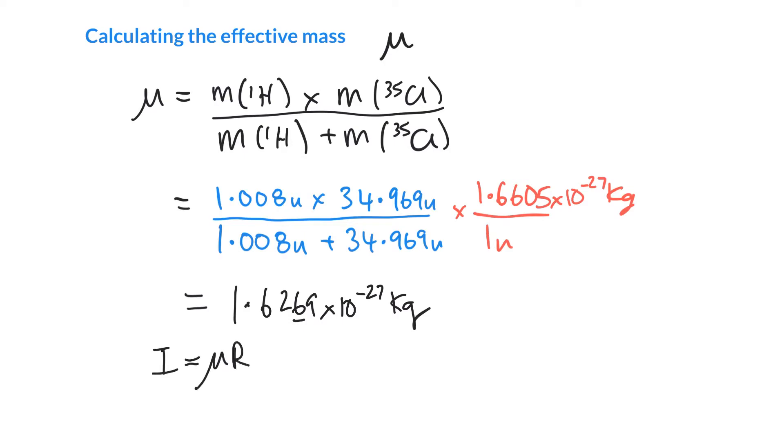We're going to use the effective mass to calculate the moment of inertia. It's μ times r squared. We've got μ already on the line above, and we have r squared. We said r was 127.4 picometers. Pico means times 10^-12, so we can make a direct substitution and square it all.